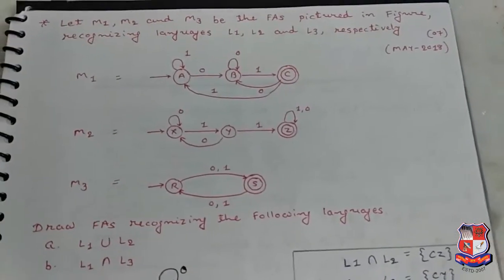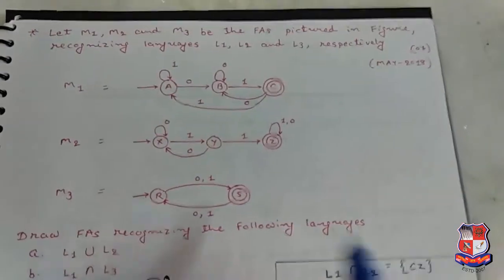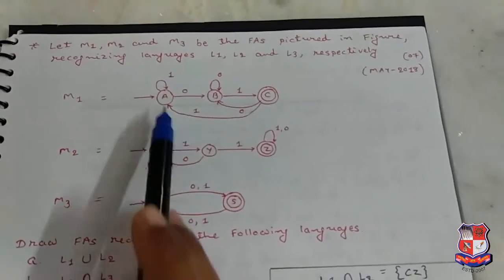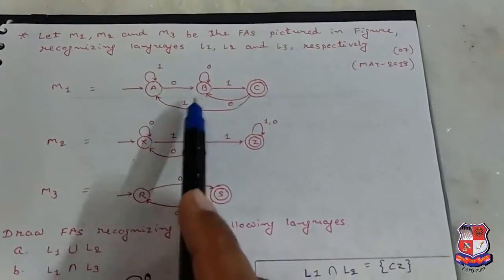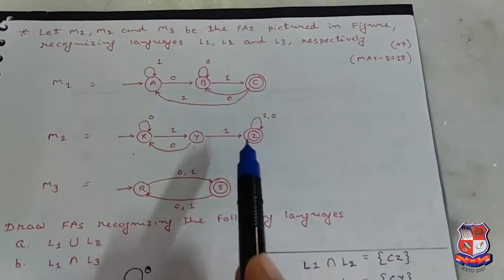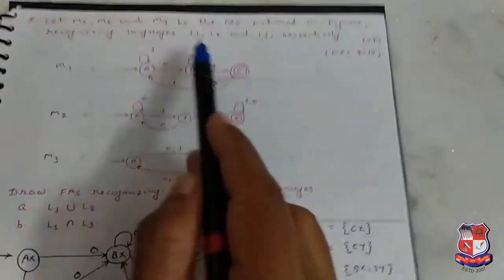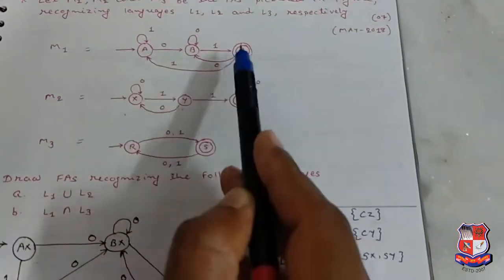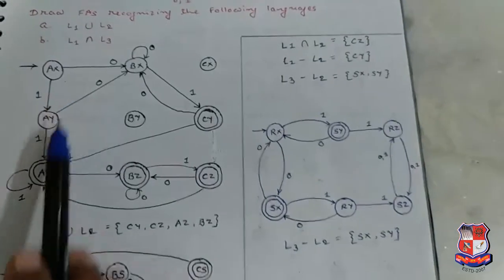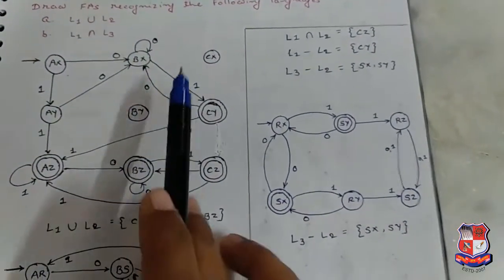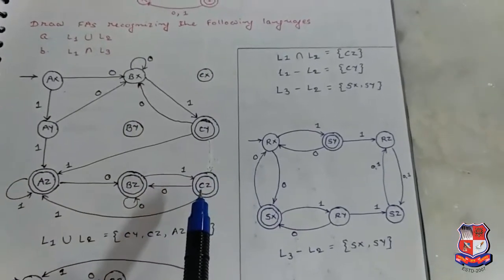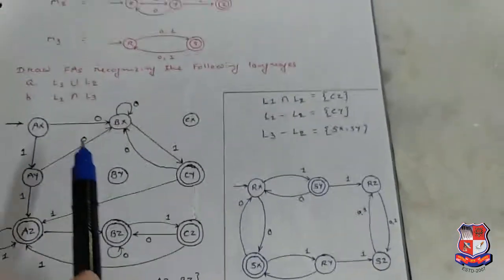The states are: A with X, A with Y, A with Z, B with X, B with Y, B with Z, C with X, C with Y, C with Z.